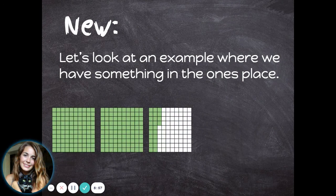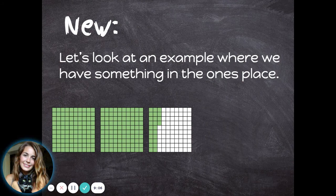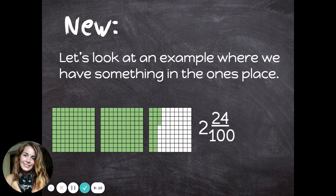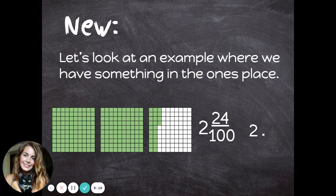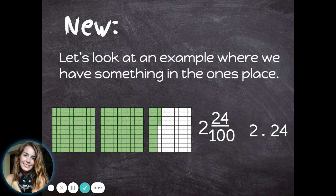Here's one with some hundredths. This time I have two whole shapes filled in, and then twenty-four out of one hundred on the third shape. So that would be two and twenty-four hundredths. As a decimal, I would put a two in the ones place because I have two whole shapes, a decimal, and then the number twenty-four reaching into the hundredths place. It's the same way you would write two dollars and twenty-four cents.